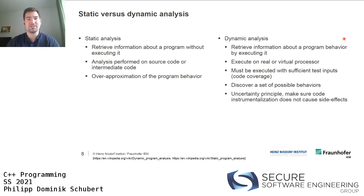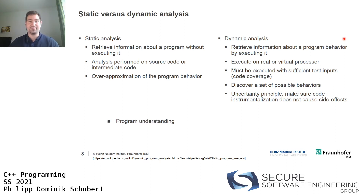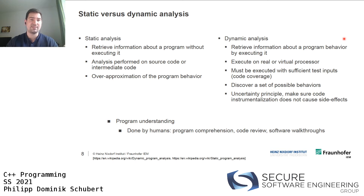Dynamic analysis gives an under-approximation because you only discover a subset of all possible behaviors. Static analysis can provide an over-approximation, discovering all behaviors along all program paths. Also keep in mind the uncertainty principle - make sure that code instrumentation used in dynamic analysis doesn't cause side effects. Program understanding done by humans - code reviews, software walkthroughs - cannot be automated and is therefore very expensive.